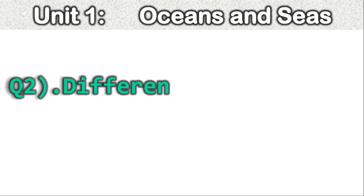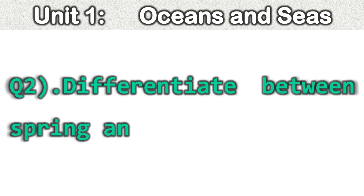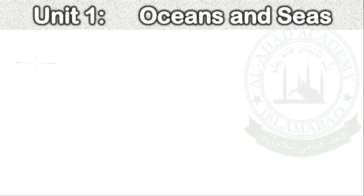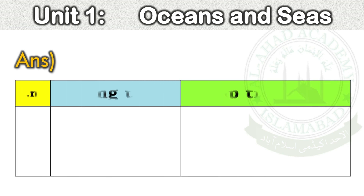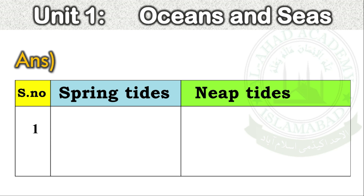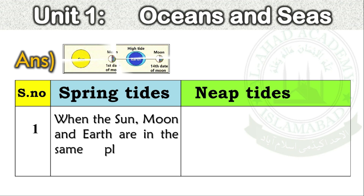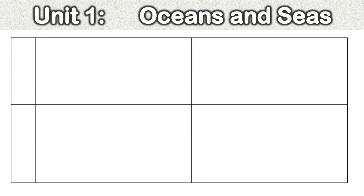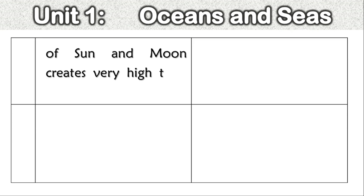Question number 2. Differentiate between spring and neap tides. Answer — Spring tides: When the sun, moon and earth are in the same plane, the combined gravitation of sun and moon creates very high tides called spring tides.